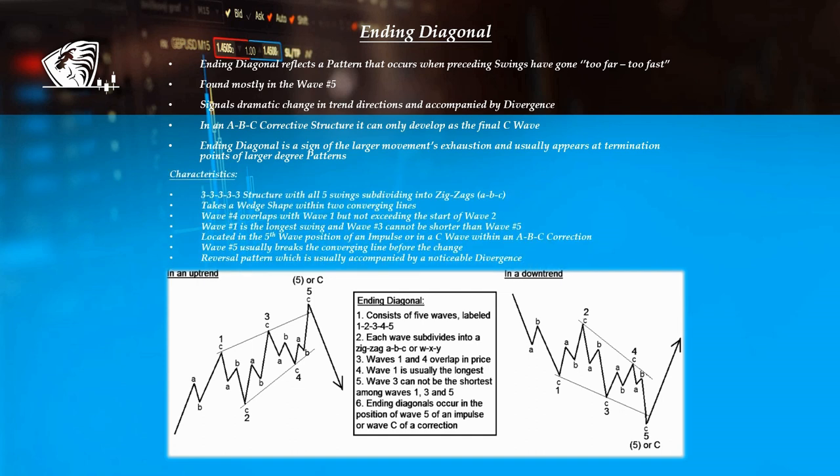Characteristics: 3-3-3-3-3 structure, with all five swings subdividing into zigzags ABC, takes a wedge shape within two converging lines. Wave 4 overlaps with wave 1, but not exceeding the start of wave 2. Wave 1 is the longest swing, and wave 3 cannot be shorter than wave 5. Located in the fifth wave position of an impulse, or in a C wave within an ABC correction. Wave 5 usually breaks the converging line before the change. Reversal pattern, which is usually accompanied by a noticeable divergence.